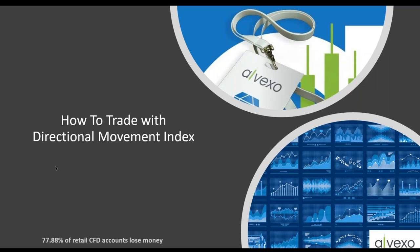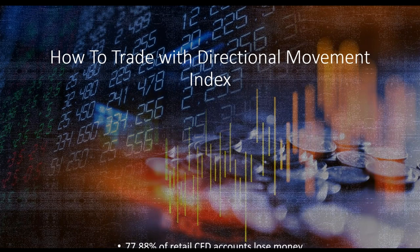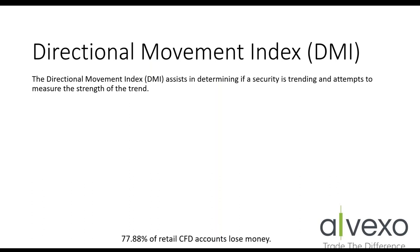Let's get on to how to trade with the Directional Movement Index, DMI. DMI is a relatively easy to use indicator to put on your charts. The Directional Movement Index assists in determining if the security is trending and attempts to measure the strength of the trend. It tells you how strong that movement is, which is very important when you're looking at trends.